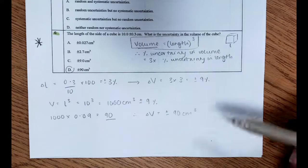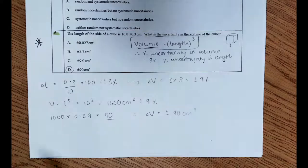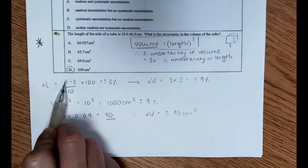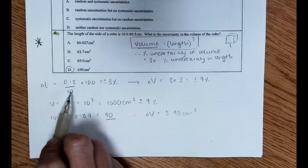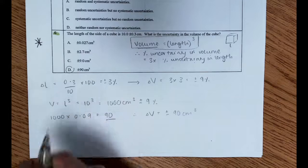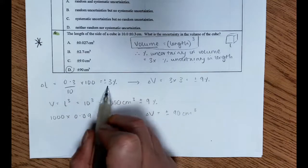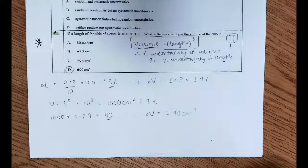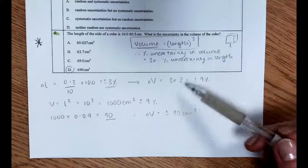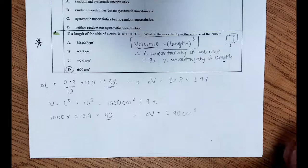So the first thing we need to do is find the percentage uncertainty in the length. We know that the absolute uncertainty is plus or minus 0.3 over the 10 centimeters, multiply by 100 to turn it into a percentage, that's 3%.